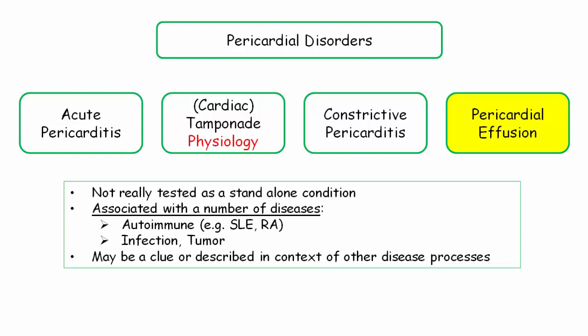For instance, a patient with lupus might have serositis presenting with a pericardial effusion, but the derivative questions will be related to lupus, not the effusion. So let's take this off our list and declutter our slide and our memories.